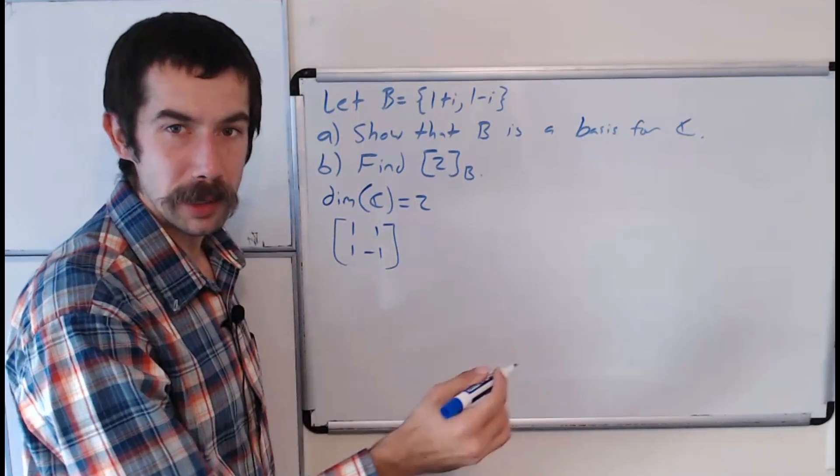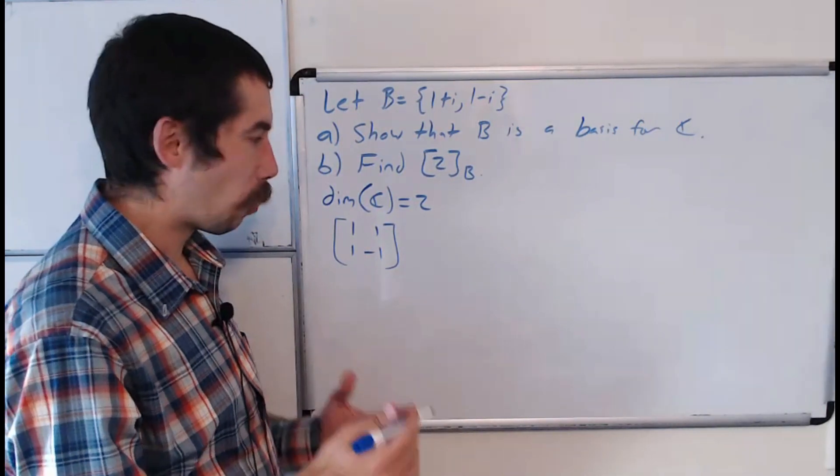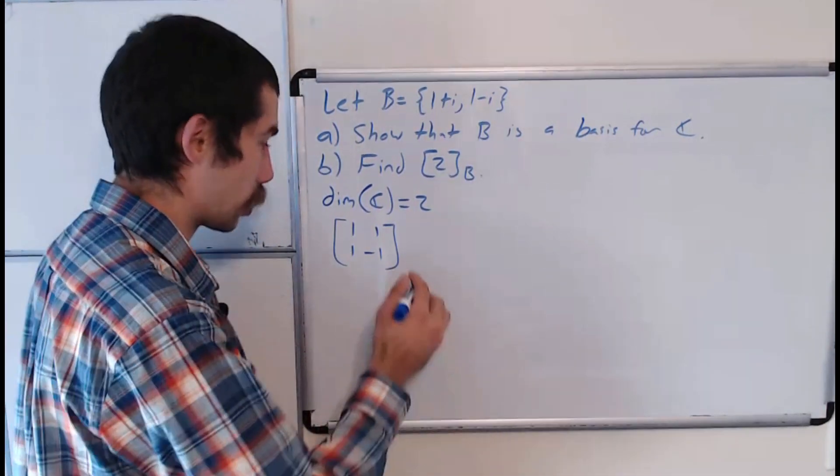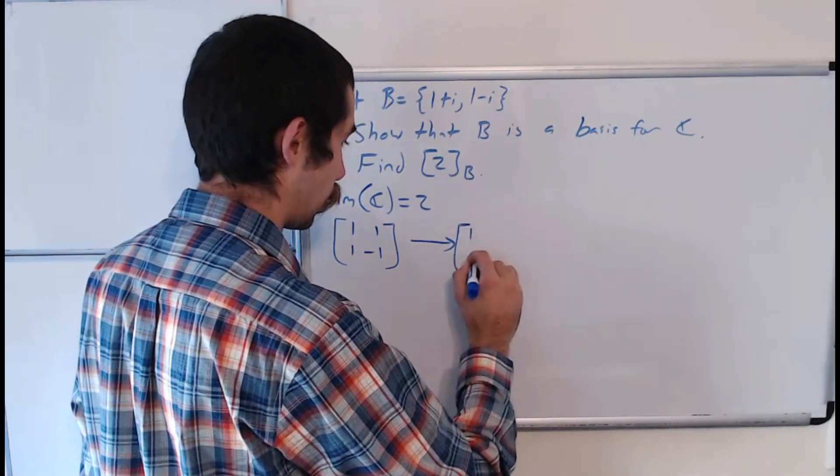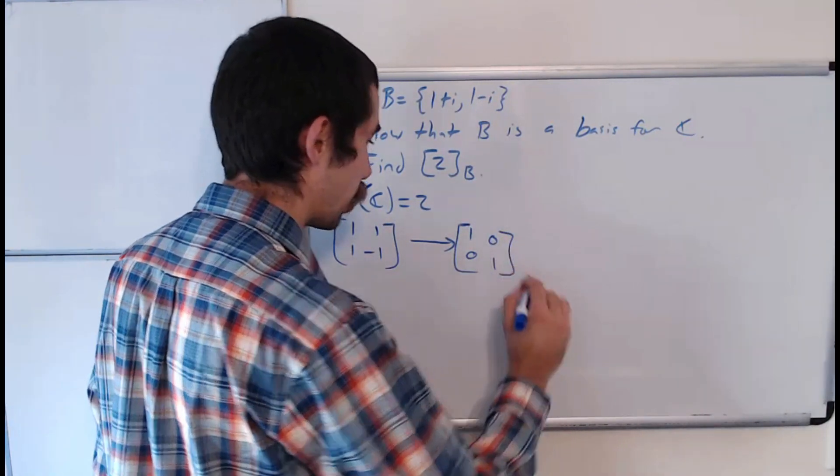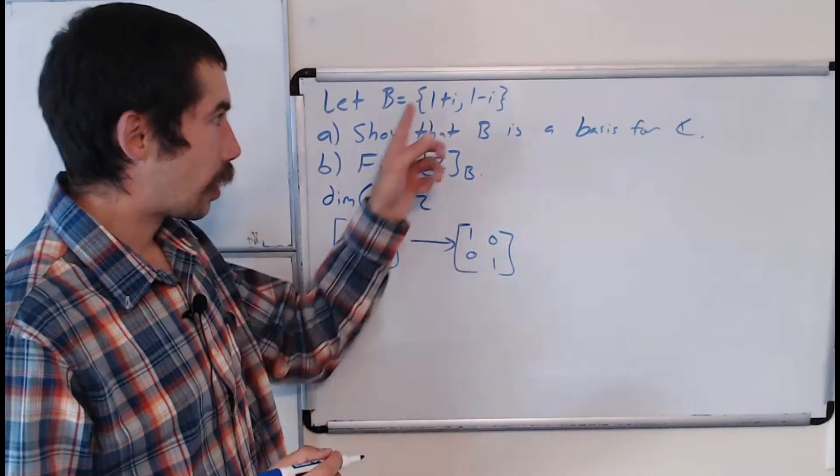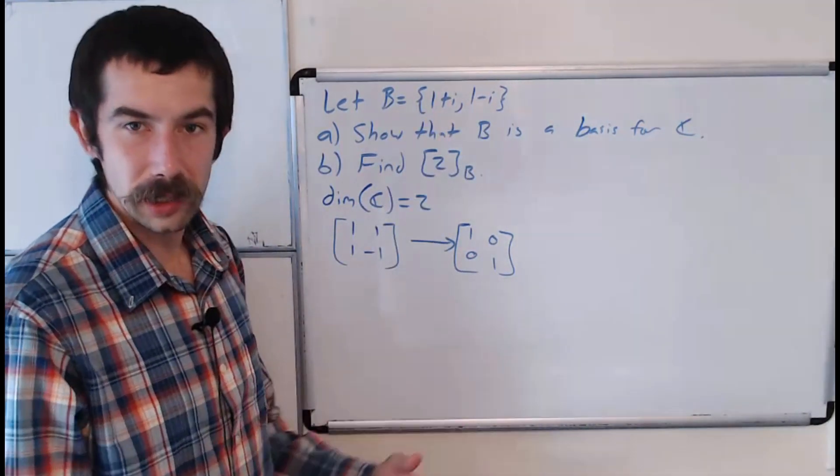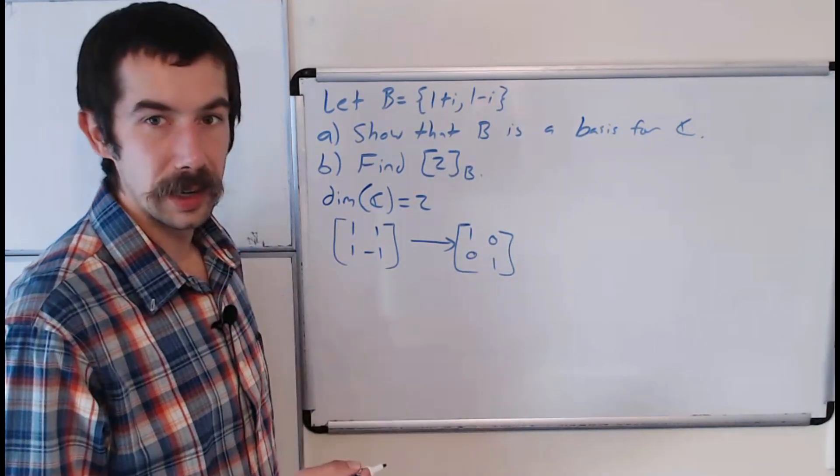We could row reduce this to see if we get a leading 1 in each column. When we row reduce this — you could do the steps on your own — it row reduces to the identity. So these two elements are linearly independent in ℂ since there is a leading 1 in each column.